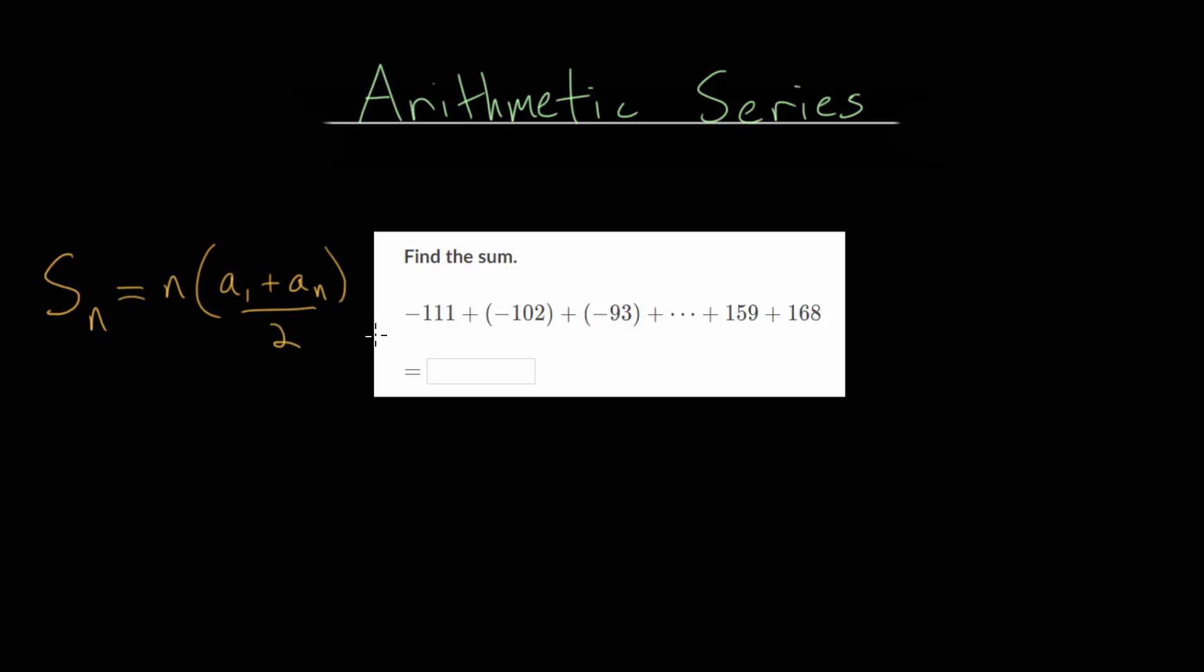The easiest way to remember this formula is that you're taking an average of the first and the last term and multiplying it by the number of terms you have. So to use this formula, we just need to know the first term, the last term, and the total amount of terms.